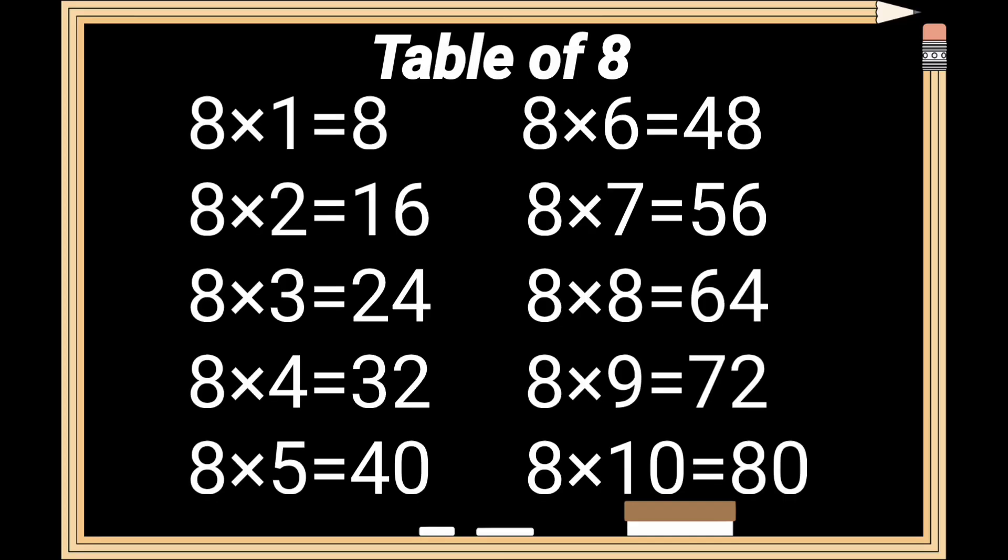Table of 8 review. 8 times 1 is 8. 8 times 2 is 16. 8 times 3 is 24. 8 times 4 is 32. 8 times 5 is 40. 8 times 6 is 48. 8 times 7 is 56. 8 times 8 is 64. 8 times 9 is 72. 8 times 10 is 80.